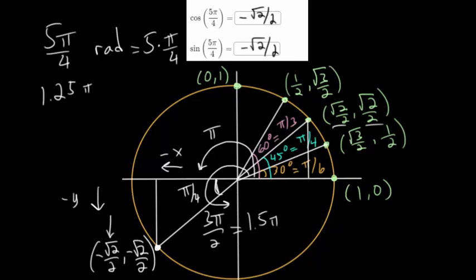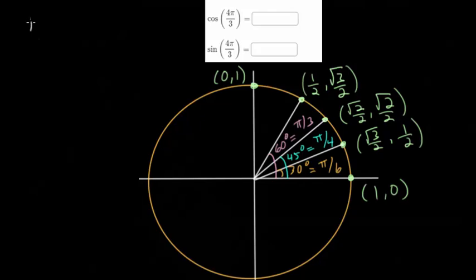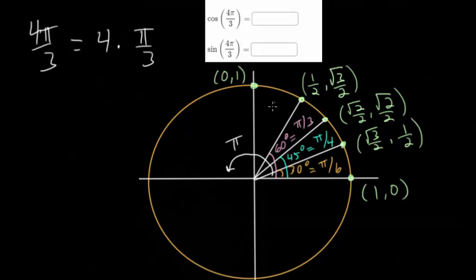For the final example, we need the cosine and sine of 4π/3. This angle is a multiple of π/3, so we're dealing with the 60-degree angle and its triangle. We need to figure out where 4π/3 is on the unit circle. Going halfway around is π radians, and 4π/3 is just π/3 above that, so we're looking at an angle just past π. Drawing in this line, the angle from π is π/3, since adding π/3 to π gives 4π/3.